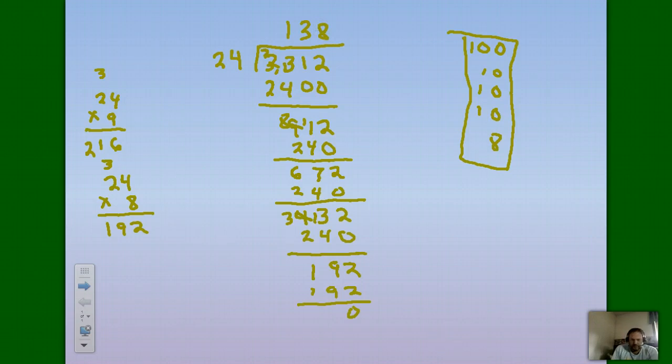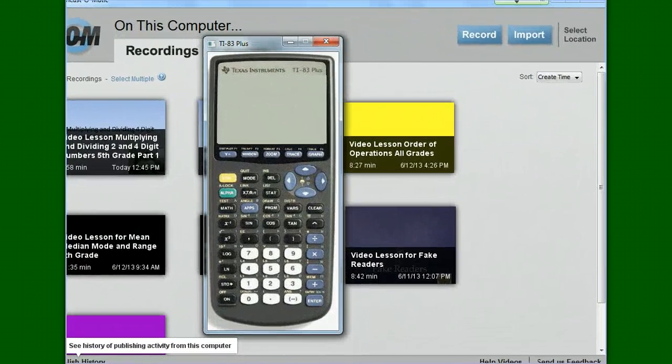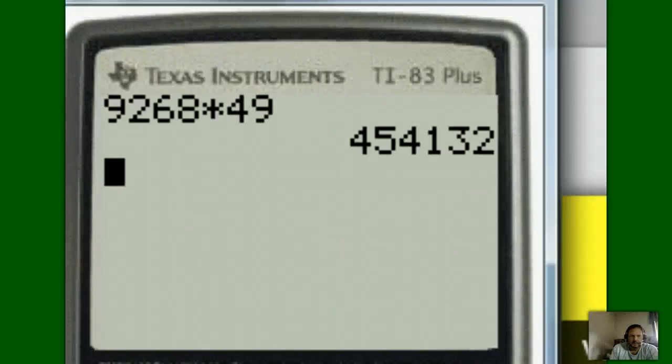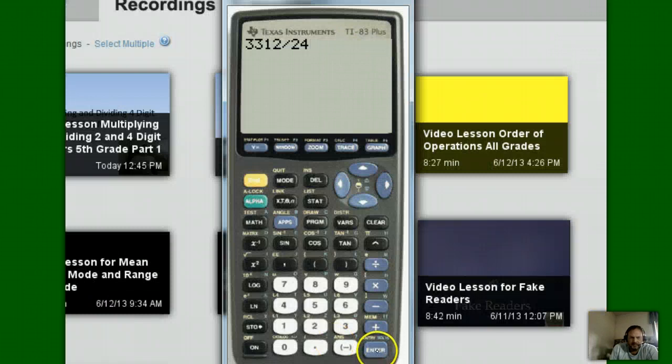We should be able to check it. So let me pause this. Turning on my calculator. I'm going to clear the display. And I'm going to put in 3,312. Did I type it right? Correct. And I'm going to divide that by 24. And my answer is 138, which is what we got. Job well done, folks. Job well done.